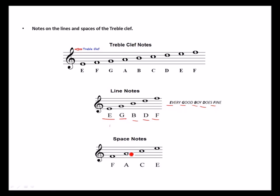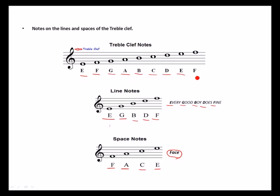The spaces of the treble clef are: F on the first space, A on the second space, C on the third space, and E on the fourth space — spelling the word FACE to help us remember. When combined, the treble clef reads: E line, F space, G line, A space, B line, C space, D line, E space, and F on the last line.